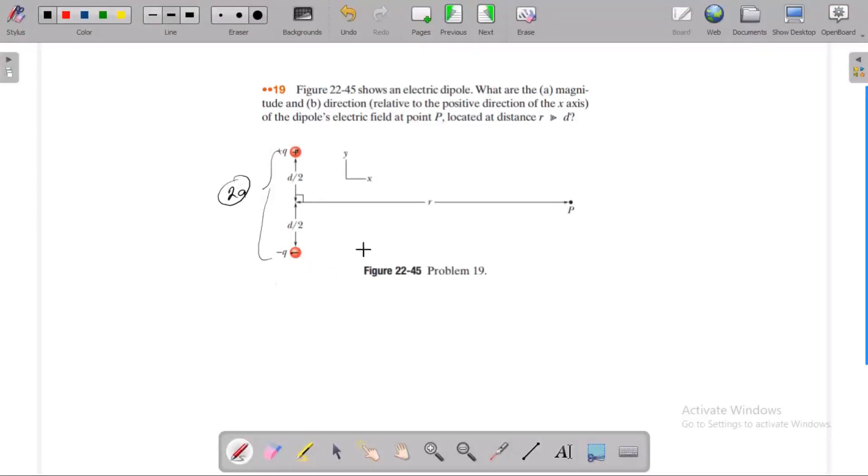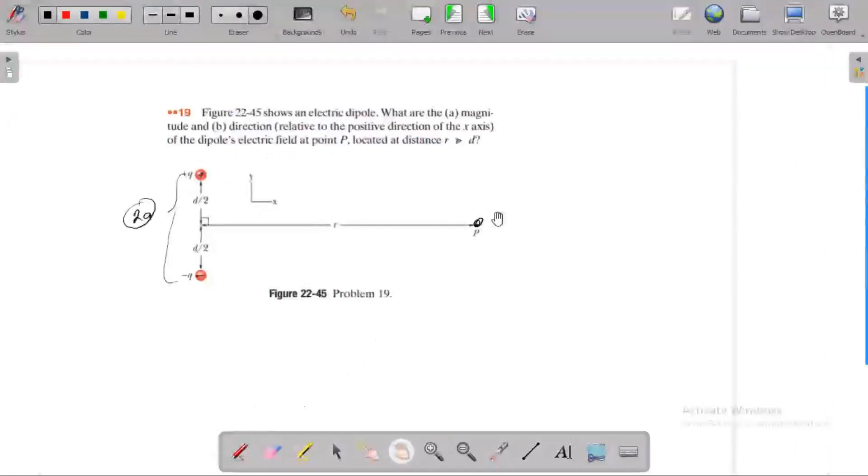So electric field created at the point P because of the dipole is given by, I already know that electric field created by the dipole is equal to product of charge and the distance 2A divided by 4 pi epsilon 0 into R cube, R cube this distance.